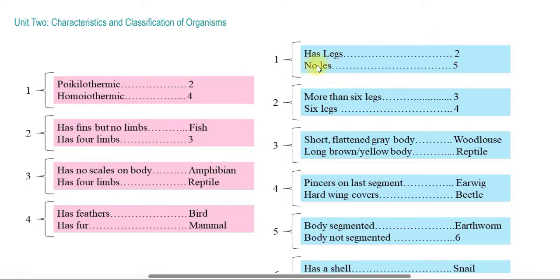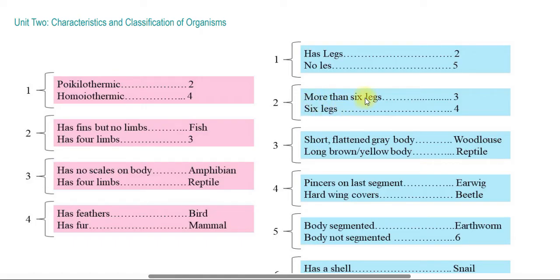For invertebrate classification: more than 6 legs leads to one group, while exactly 6 legs indicates an insect. If the animal has 6 legs, it could be classified further. If it has more than 6 legs, it is not an insect.